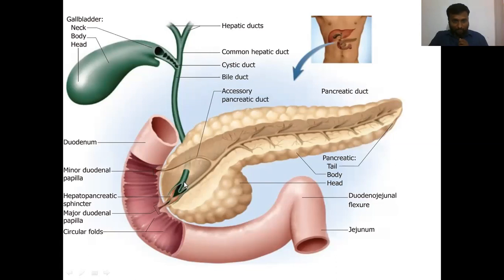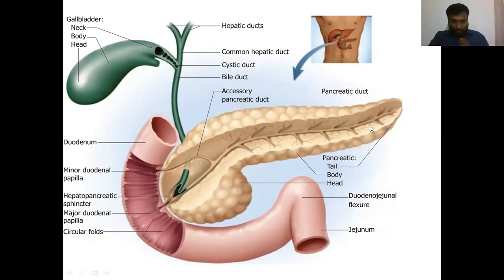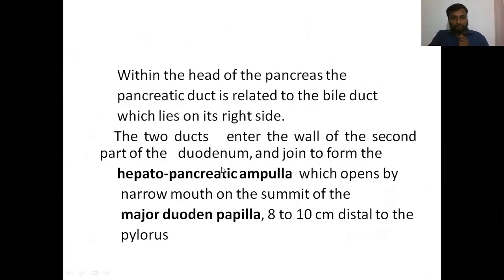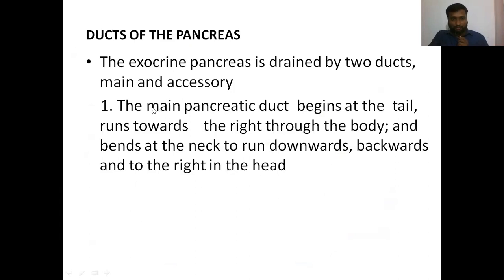This smaller projection is the minor duodenal papilla. The accessory pancreatic duct starts from the head, runs upward, and opens into the second part of the duodenum through the minor duodenal papilla. So we have two papillae: the major duodenal papilla and the minor duodenal papilla. The main pancreatic duct opens through the major duodenal papilla, and the accessory duct opens through the minor duodenal papilla.